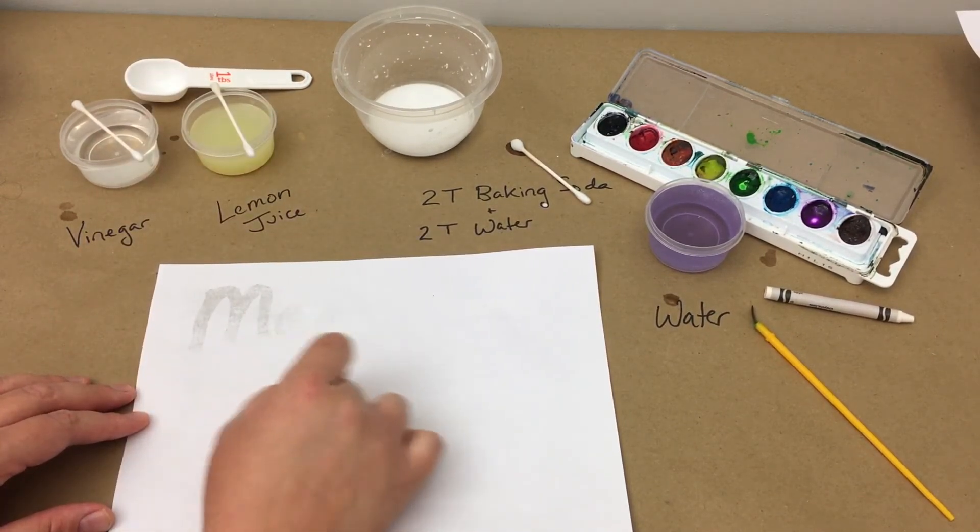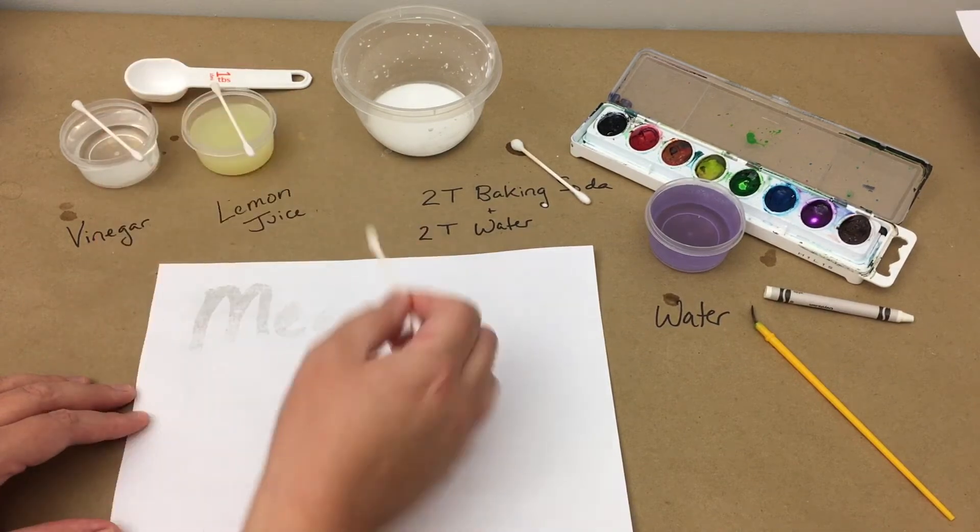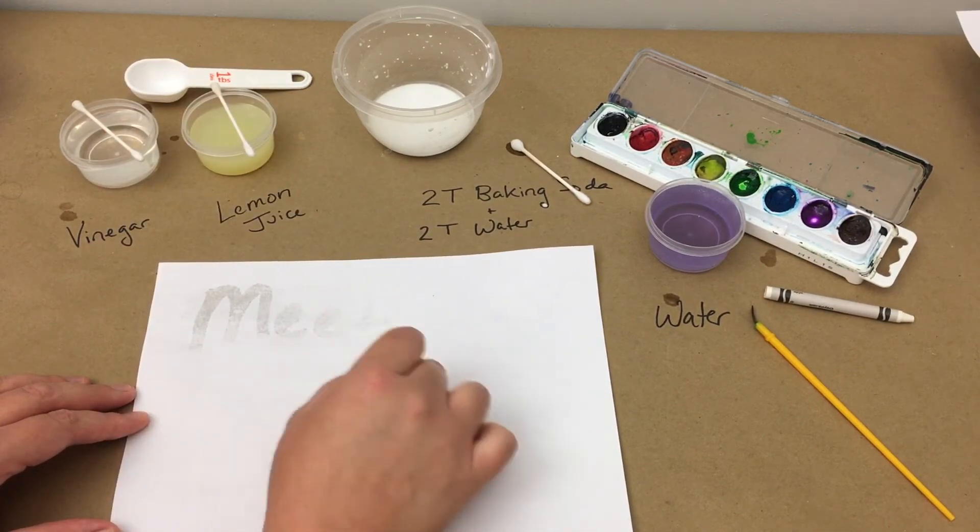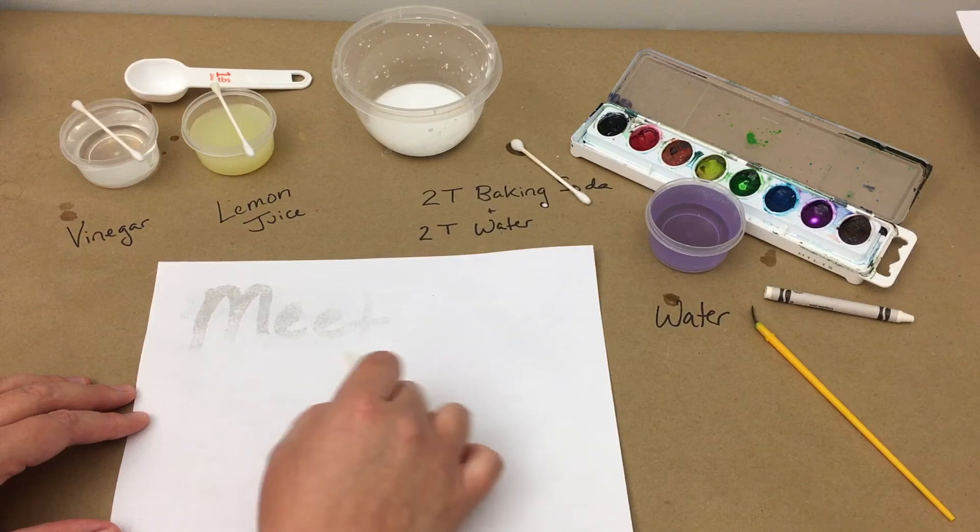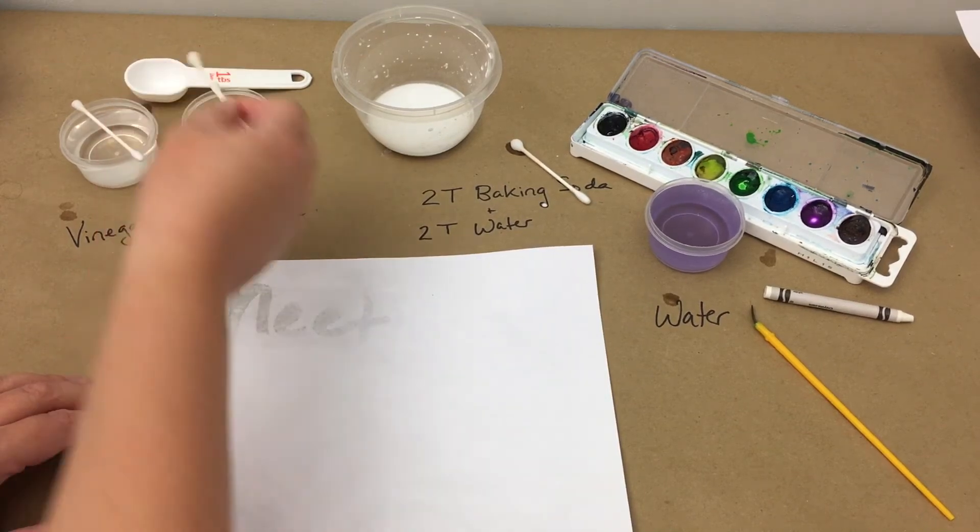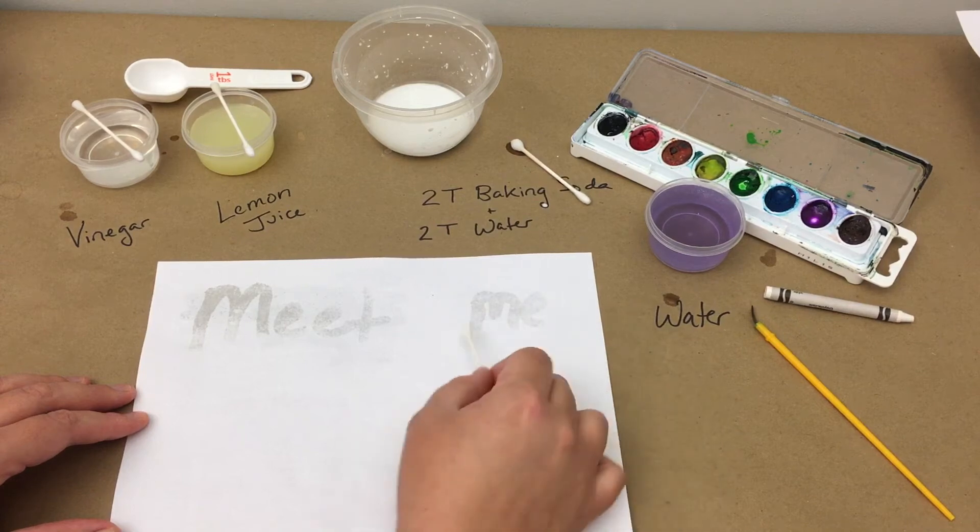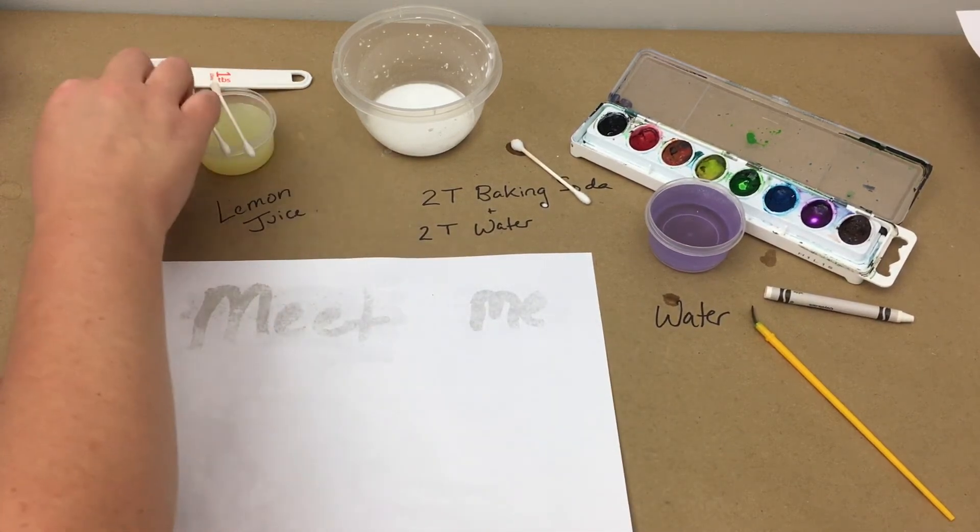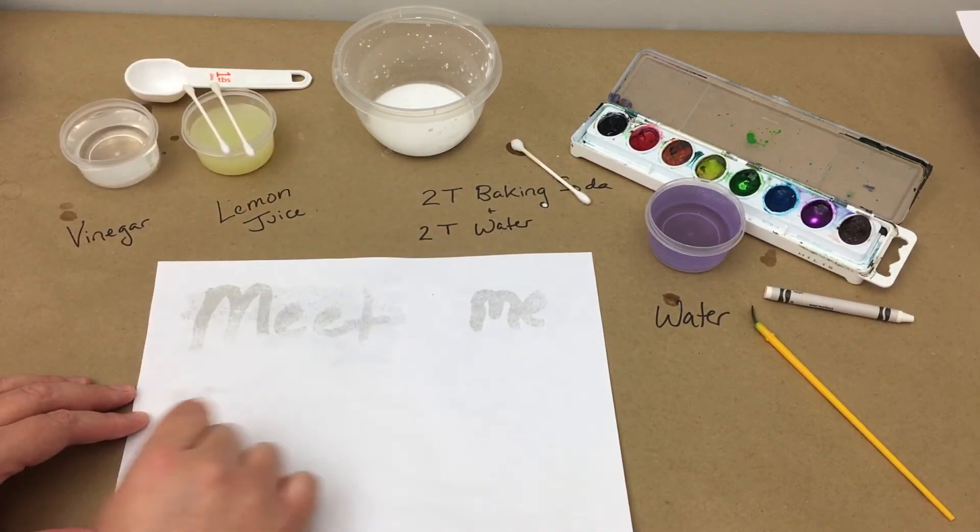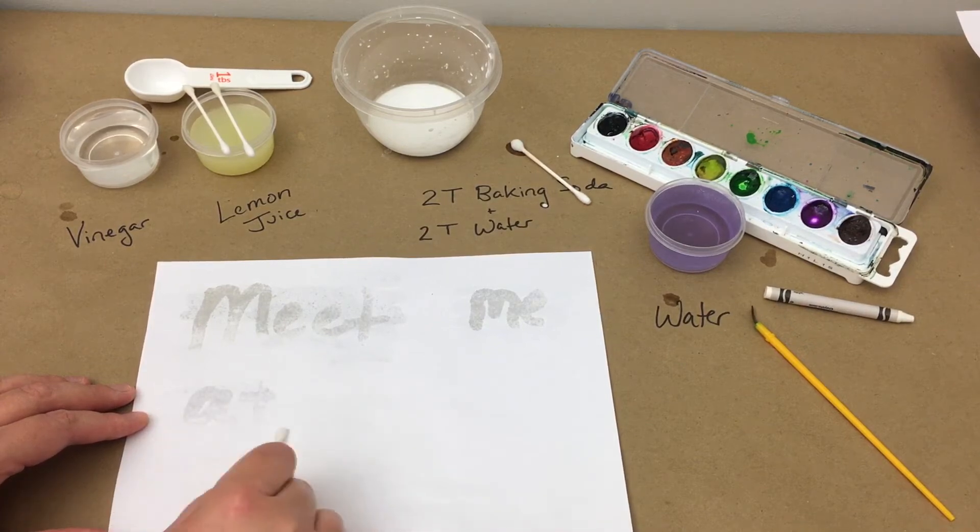So we should dip our cotton swabs or cotton balls or whatever we are using into the acidic solution, whether it is lemon juice, a different fruit juice, or vinegar, and rub it over where we think the message might be. The acid will react with the basic that has soaked into the paper, and help us reveal the message.